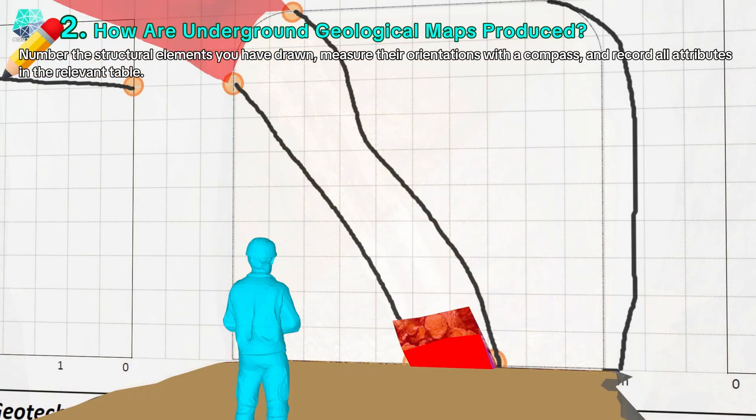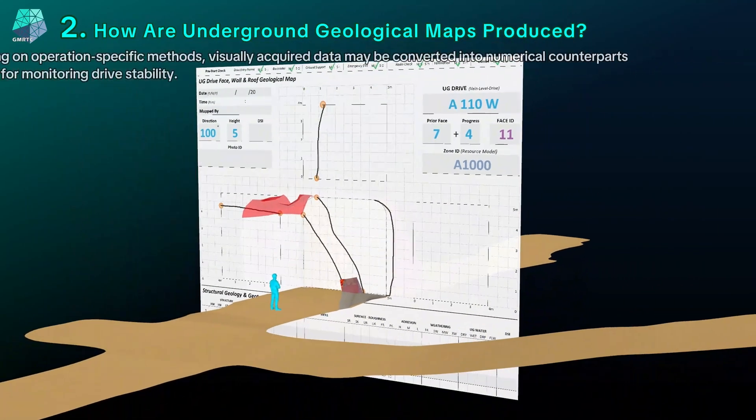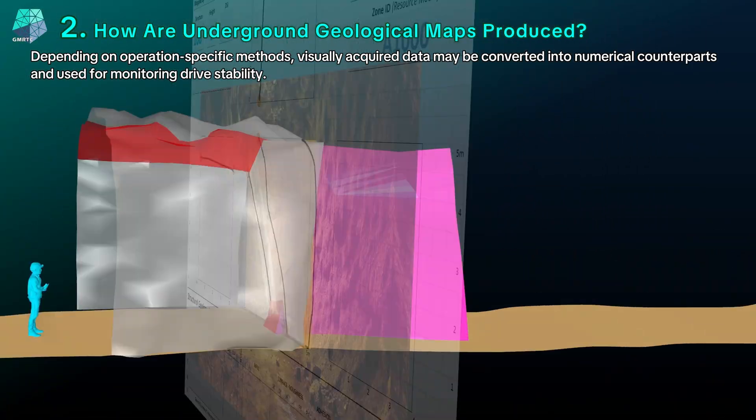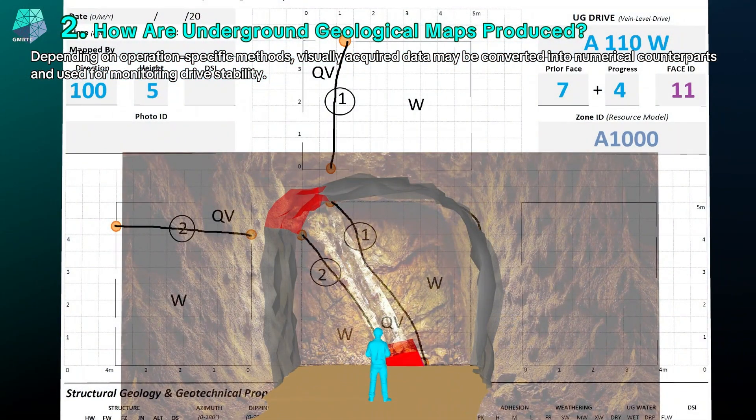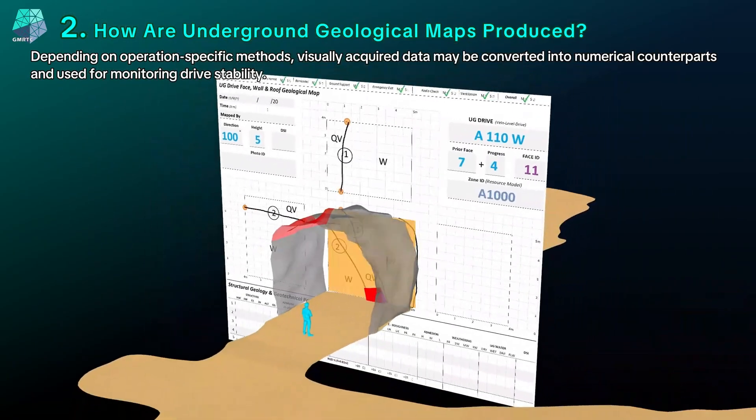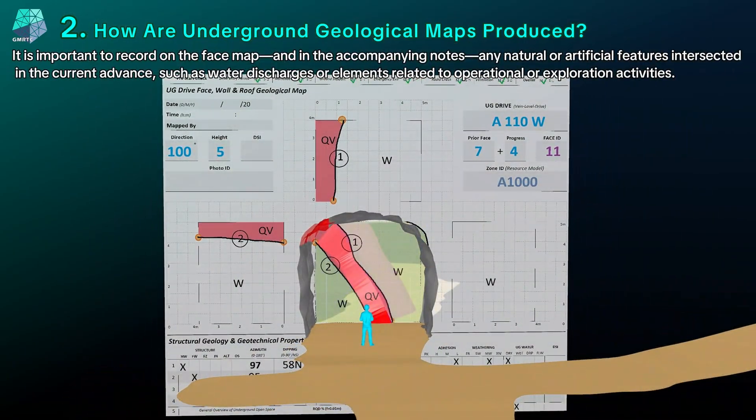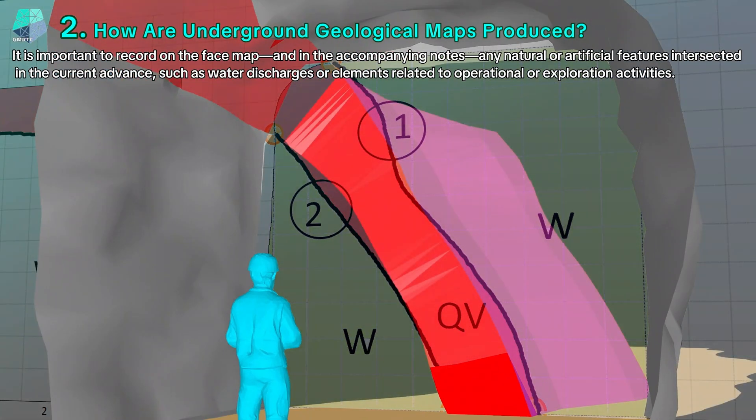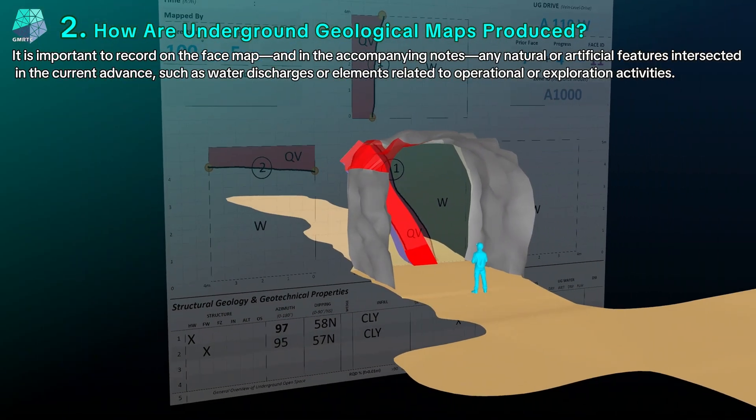Depending on methods defined specifically for the operation, visually acquired data may be converted into numerical counterparts and used for monitoring gallery stability. It is important to note on the face map and in the accompanying description any natural or artificial features intersected during the advance, such as water discharges, and elements related to operational or exploration activities.